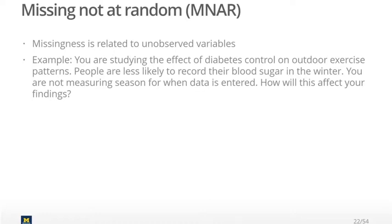So just to recap: if the missingness is completely random, we call it MCAR, or missing completely at random. If the missingness is due to a pattern present in your data set from other variables — for example, whether a person is male or female — then that's missing at random, or MAR. And if the missingness looks completely random but is actually due to a variable you just didn't collect, then we call that missing not at random. Unfortunately, there's really no way to prove your data is missing not at random other than to go out and collect variables that might explain the missingness.